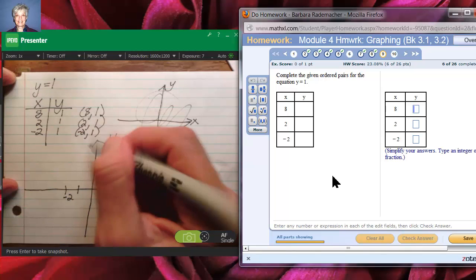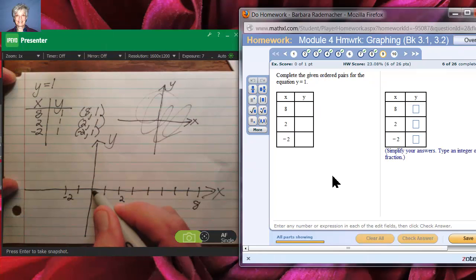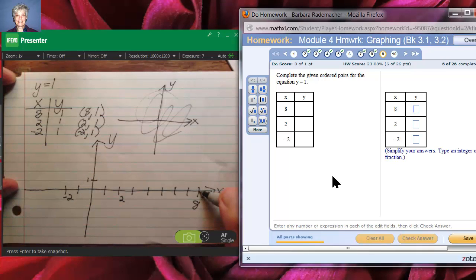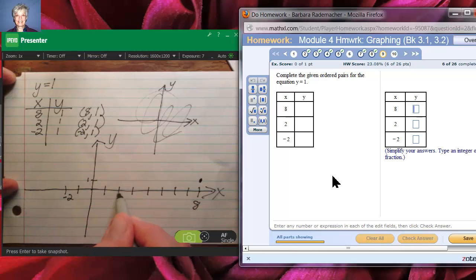And, now, to graph these three points. Let's see. To graph (8, 1), I would start at the center. Oh, let me draw 1 here. 1. Alright. I would start at the center and I would go out to 8 on the x-axis and up to 1 on the y-axis. And if I wanted to graph the point (2, 1), I would start at the center. I would come out to 2 on the x-axis and go up to 1 on the y-axis.